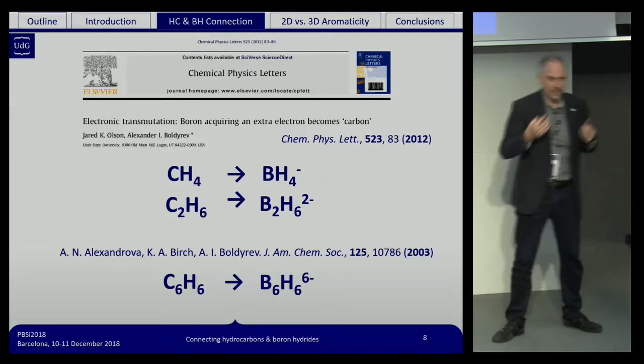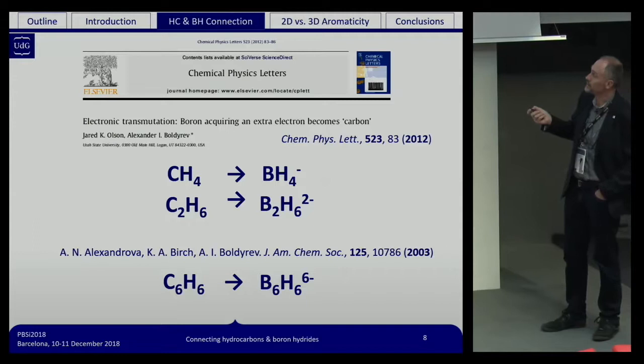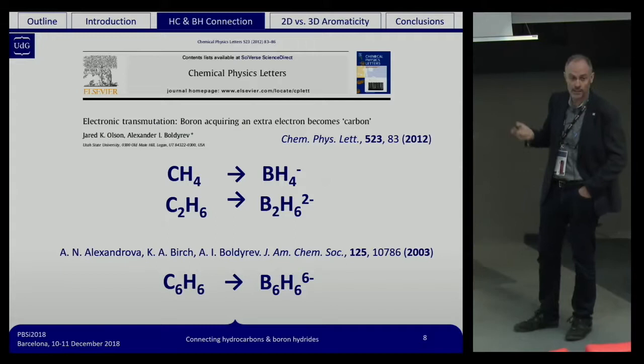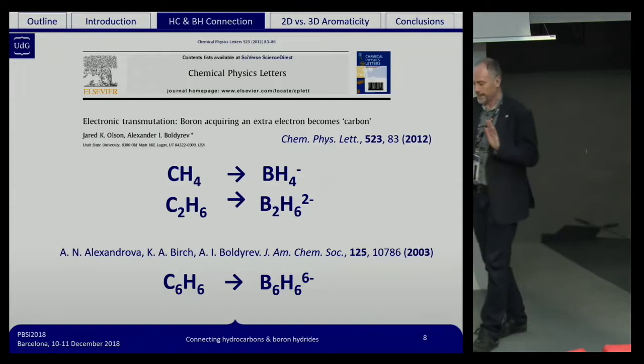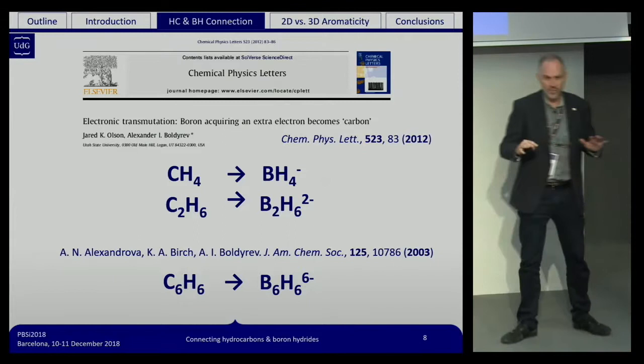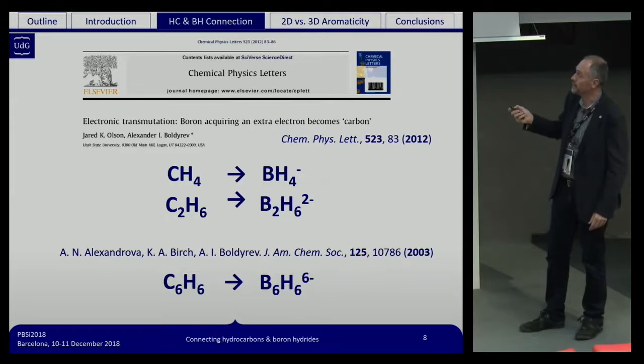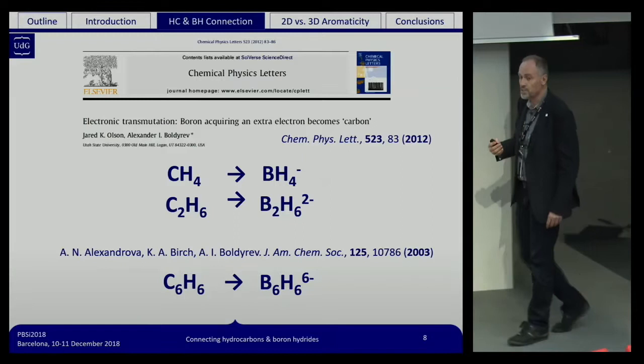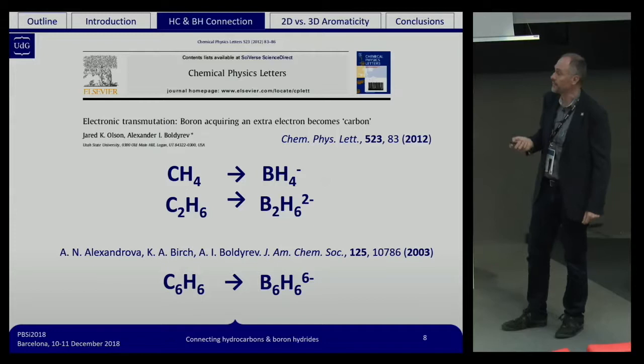The inspiration came, among other things, from the work of Alexander Boldyrev with the title 'Electronic Transmutation: Boron Acquiring an Extra Electron Becomes Carbon.' They put two examples: if you take CH4 and change carbon by boron−, you get BH4−, whose chemical properties are very different but the molecular and electronic structure is relatively similar. Also, if you take ethane, you can make this B2H6 2− that could be the analogous of ethane in boron hydride chemistry.